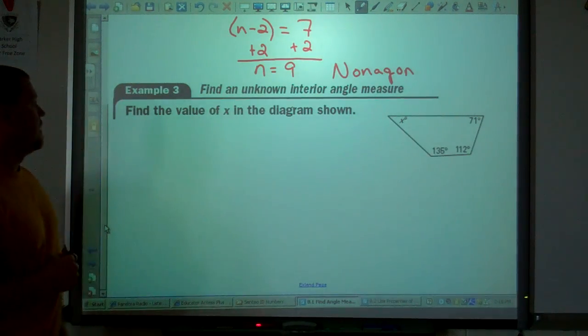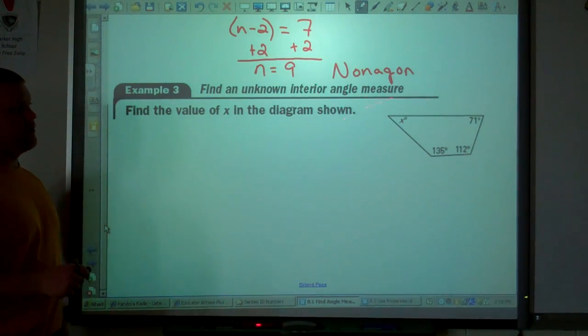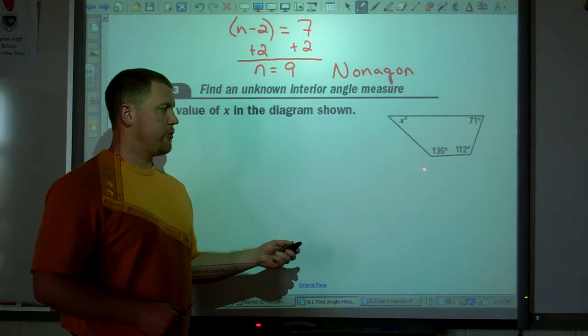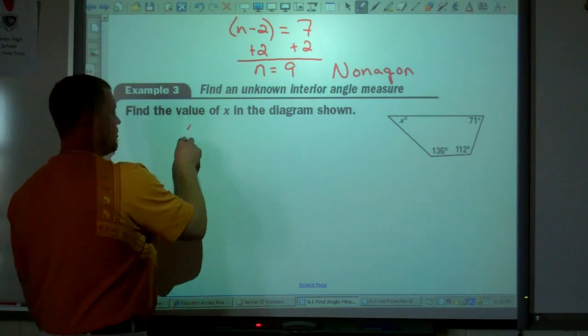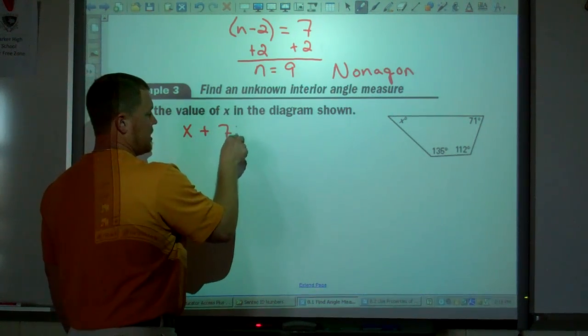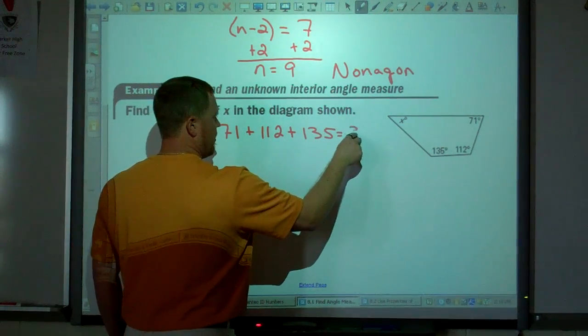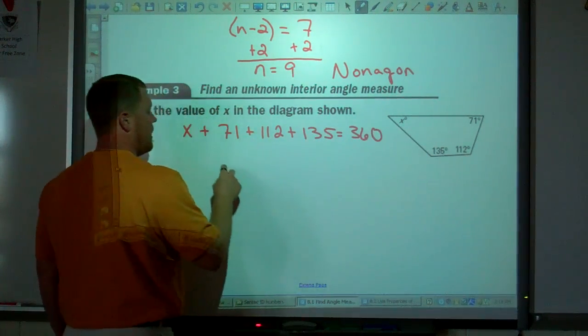Next example. Find the value of x in the diagram shown. We have what kind of polygon? That would be a quadrilateral. One, two, three, four sides. And a quadrilateral, you add up the angle measures, and it should equal 360.